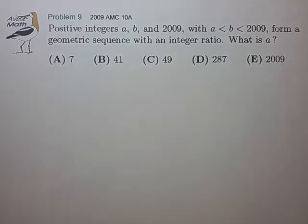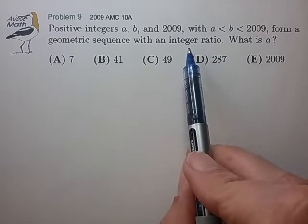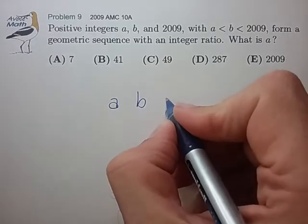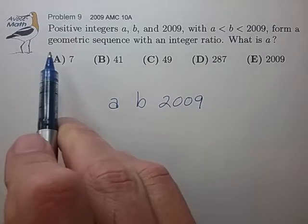Okay, so we're given a geometric sequence with an integer ratio, which seems to be important. Essentially we have three numbers: a, b, and 2009, in a geometric sequence.